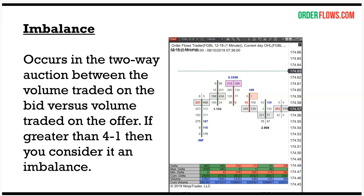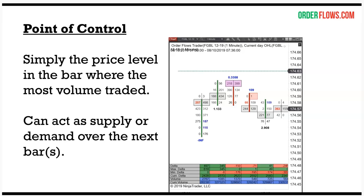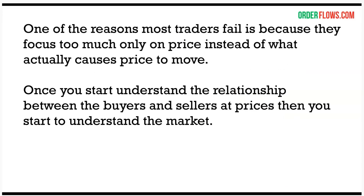On the footprint chart, buying imbalances show up as blue numbers and selling imbalances as red numbers inside the bar. The last building block is point of control — every bar has a point of control, which is simply the price level in the bar that has the most volume traded. It can act as support or resistance over the next bar. My software highlights special 'prominent point of controls' which indicate support or resistance and near-term market turning points.